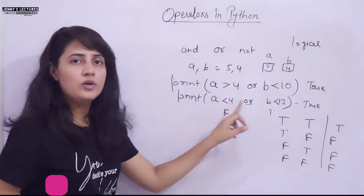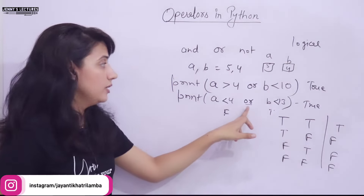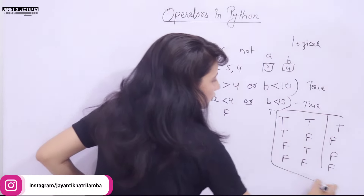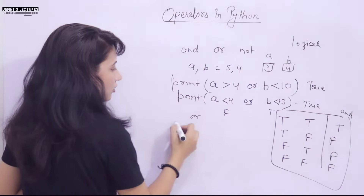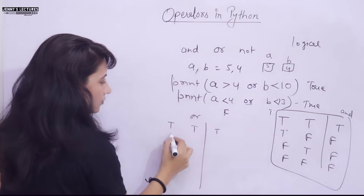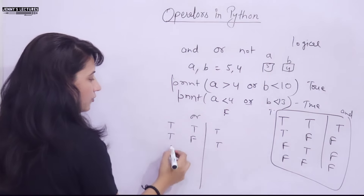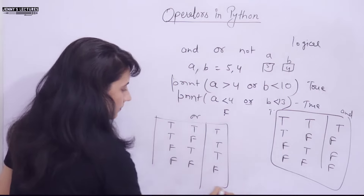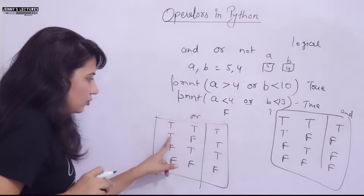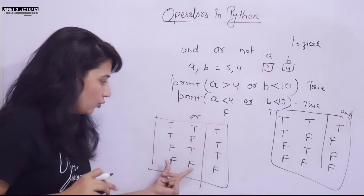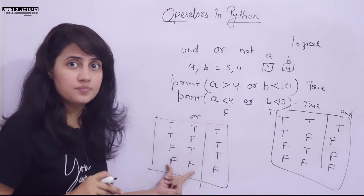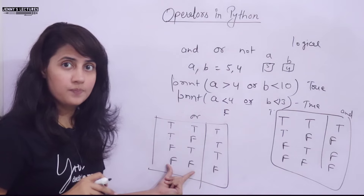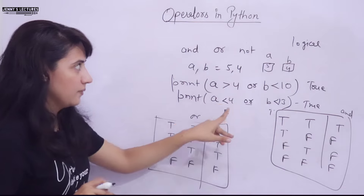For the output to be True, only one condition must be True in the case of OR. The truth table for OR: if both are True it gives True; if one is True and one is False it gives True; if one is False and one is True it gives True; if both are False it gives False. So OR gives False only if both conditions are False.